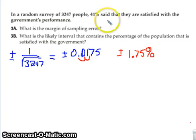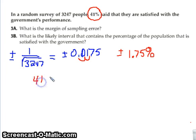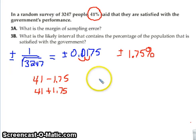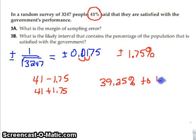Our interval means we take the 41% found in their sample, subtract 1.75 and add 1.75, so my interval is going to be 39.25 to 42.75. It's going to fall within that range — we assume that our population would fall within that range.